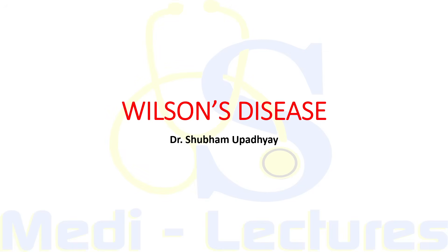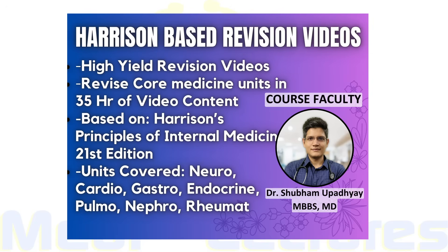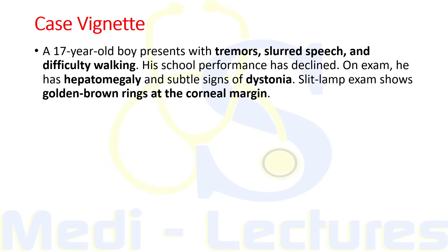Welcome back to the channel. In this video lecture we'll discuss an important metabolic condition which can affect young individuals - Wilson's disease. We start with a case: a 17-year-old boy presents with tremors, slurred speech, and difficulty walking. His school performance has declined. On examination he has hepatomegaly, subtle signs of dystonia, and slit lamp examination shows golden-brown rings at the corneal margin. We will discuss what is going on in this patient and what systems can be affected by Wilson's disease.